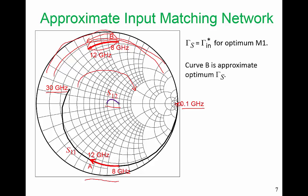Curve B, in summary, is the approximate optimum gamma s. This is what we are trying to design our input matching network to look like.